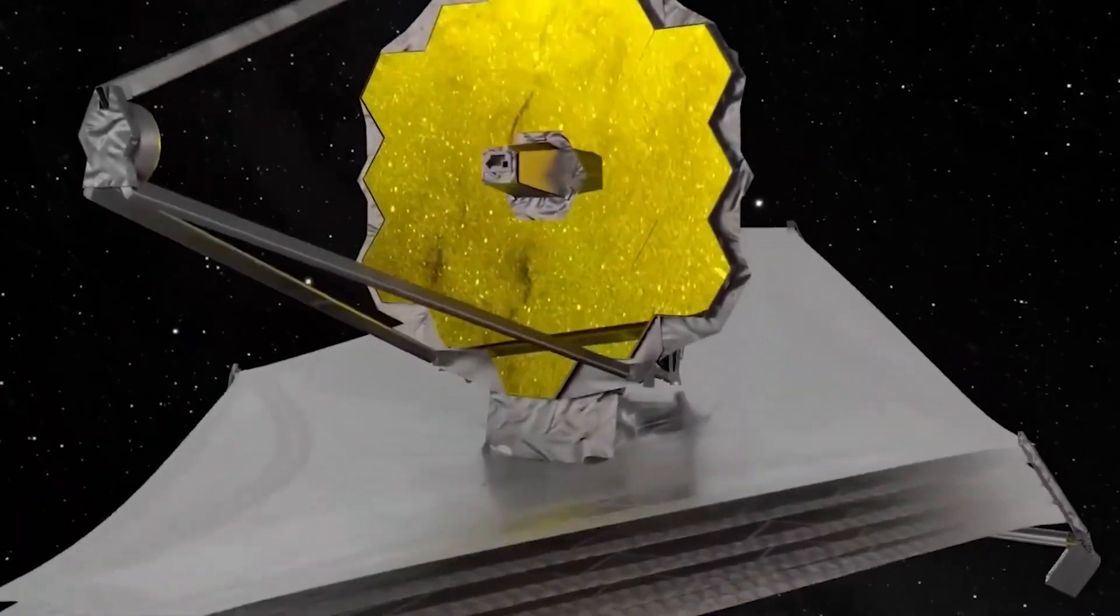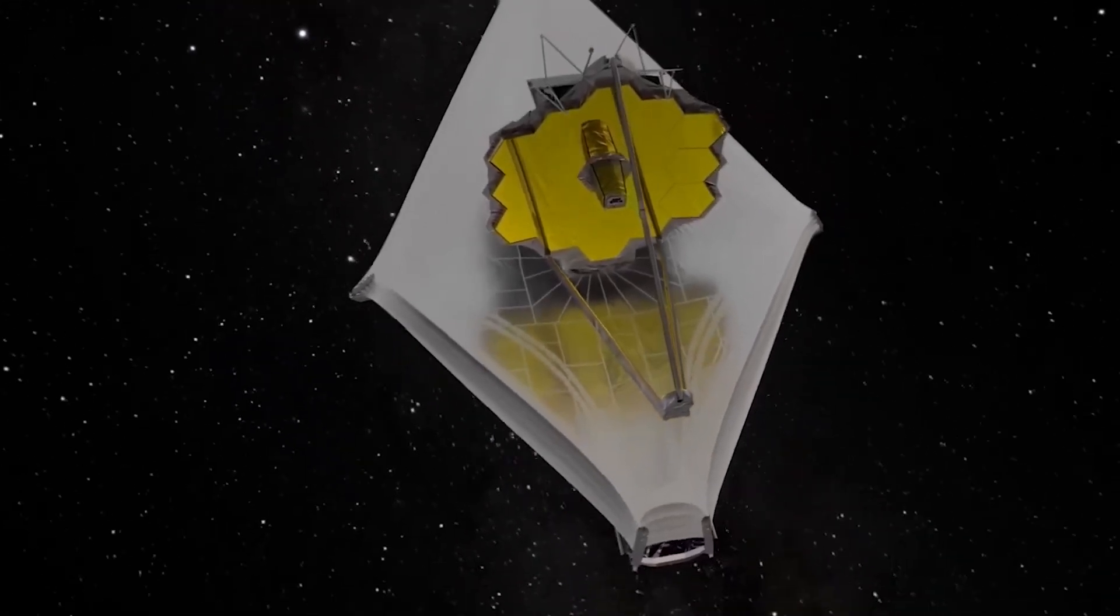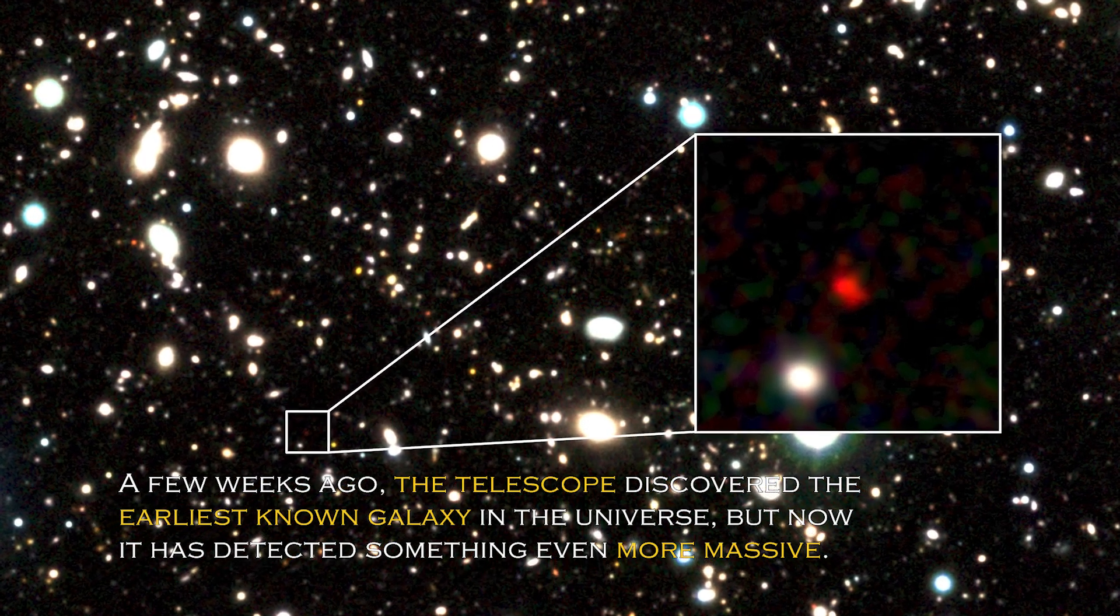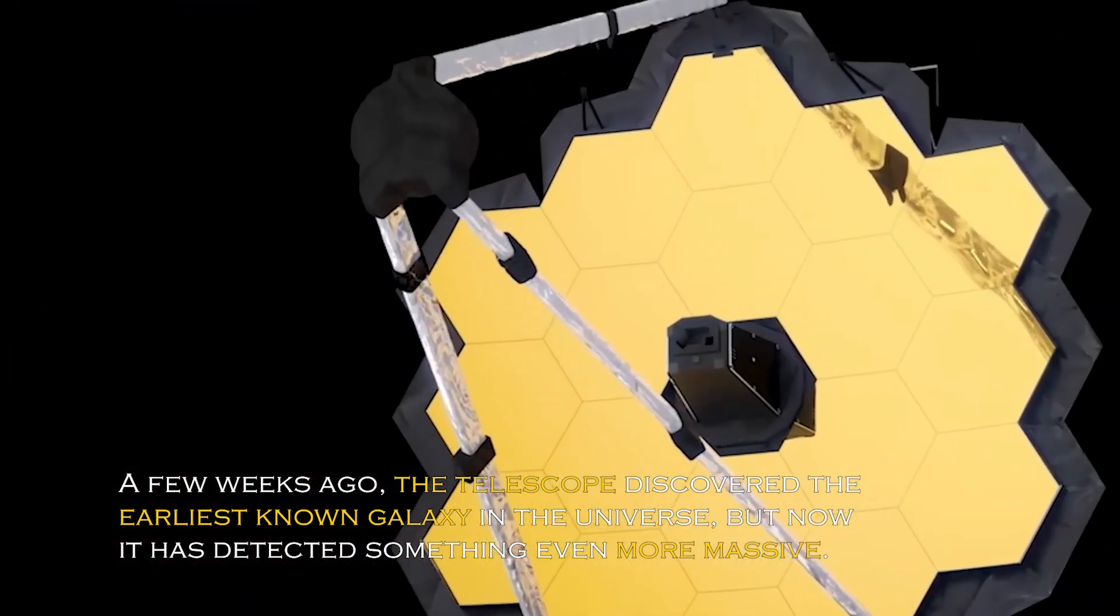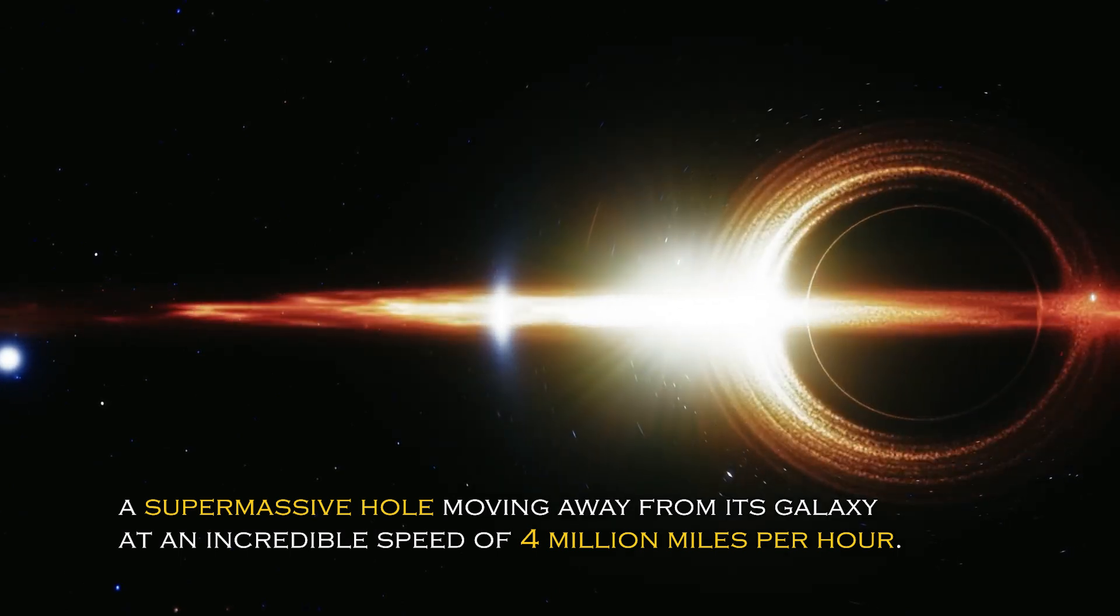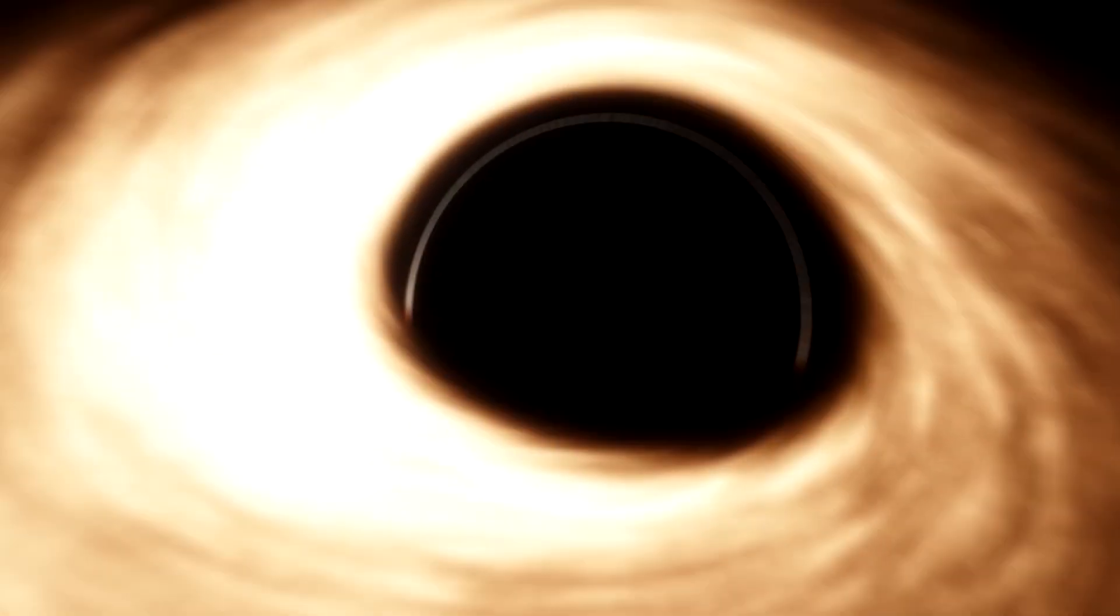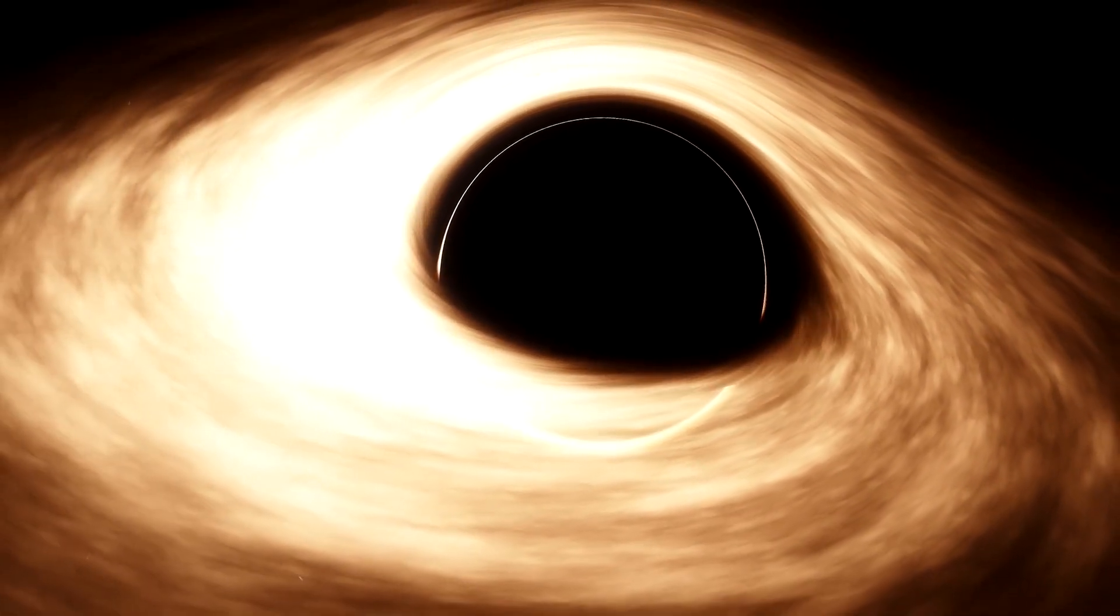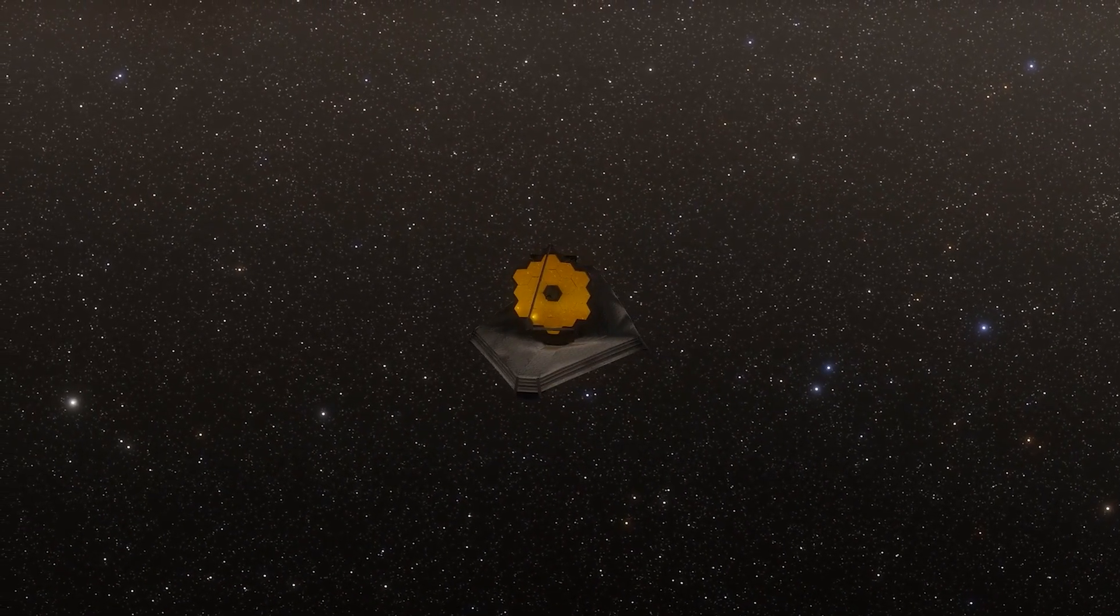In a surprising turn of events, NASA's James Webb Space Telescope has made a discovery that has astronomers around the world in awe. A few weeks ago, the telescope discovered the earliest known galaxy in the universe, but now it has detected something even more massive – a supermassive black hole moving away from its galaxy at an incredible speed of 4 million miles per hour. This discovery has very important implications and has generated much speculation among scientists and space enthusiasts about what it means for our understanding of the cosmos.